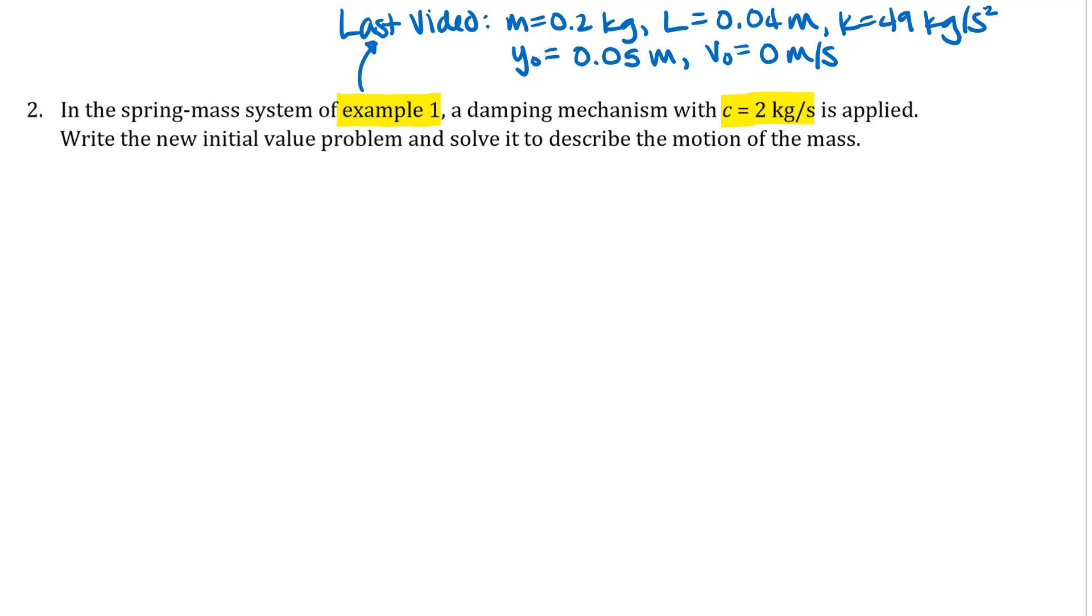That's what we looked at in the last video. I've written all the parameters that we had from that problem up here at the top, and the only difference here is that we now have a damping mechanism with c equals 2 kilograms per second.